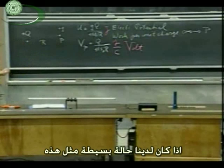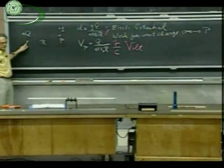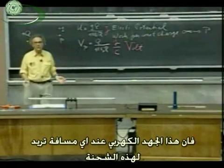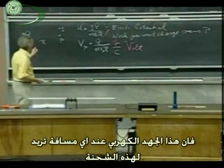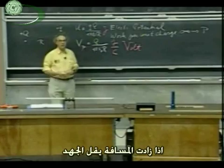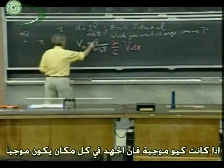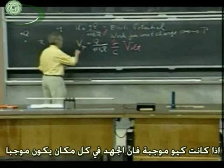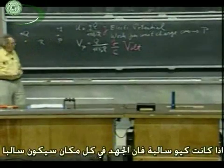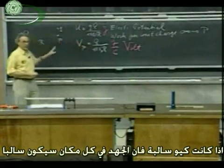If we have a very simple situation where we only have one charge, then this is the potential anywhere, any distance you want from this charge. If R goes up — if you're further away — the potential will become lower. If this Q is positive, the potential is everywhere in space positive for a single charge. If this Q is negative, everywhere in space the potential is negative.